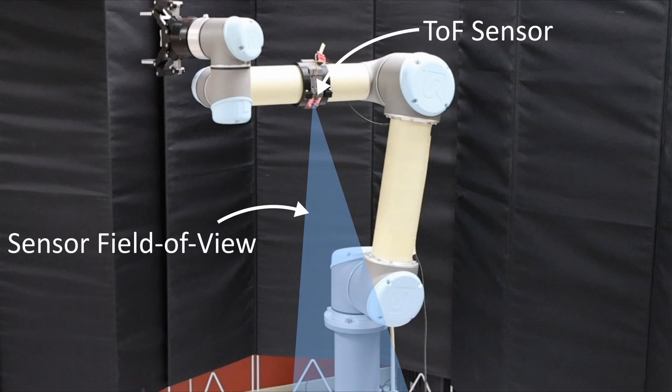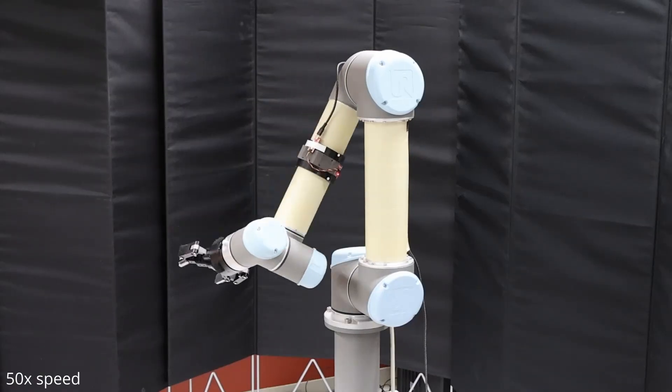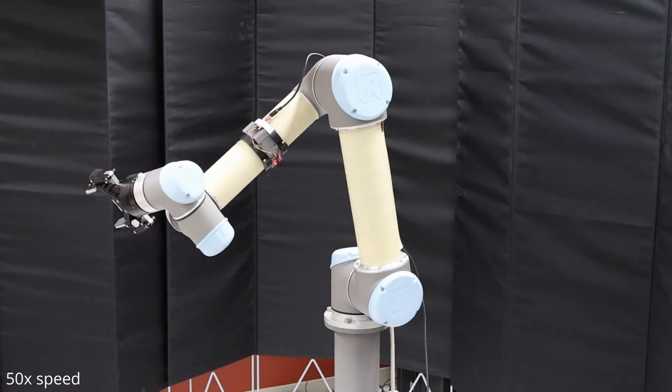We demonstrate another configuration in which the sensor is facing outwards from the arm surface. For this sensor position, we build a model by sampling the positions of the second and third robot joints.